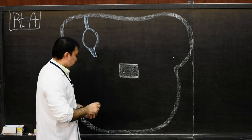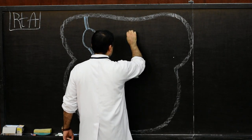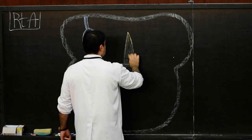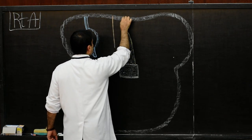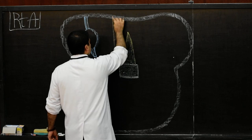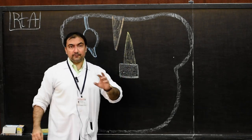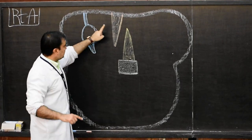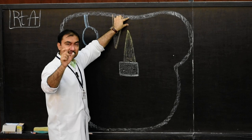The inter-atrial septum has developed, and we will draw it as septum primum. As seen in the last lecture, this is septum primum, and overlapping it is septum secundum. Septum secundum is developed from the left venous valve plus the cephalic end of septum primum, as we have seen in the last inter-atrial septum lecture.